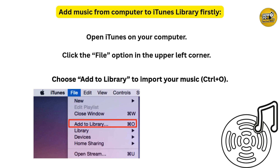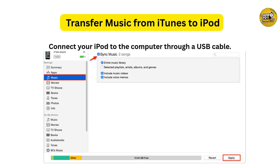The third way is to transfer music to iPod with iTunes. Make sure you have the latest iTunes installed on your computer. If you were a Windows Media Player user, transfer songs from Windows Media Player into the iTunes library first. Then open iTunes, click the File option in the upper left corner, and choose Add to Library to import your music. Connect your iPod via USB cable — iTunes will detect it automatically. Tap the Music option on the left panel, check the Sync Music box, select the Entire Music option, and click Apply to start synchronizing.